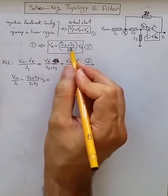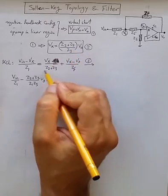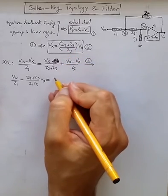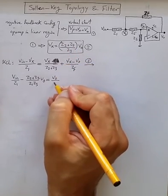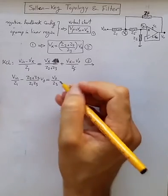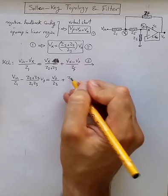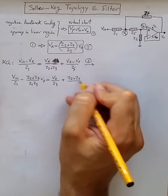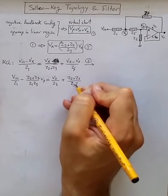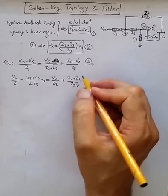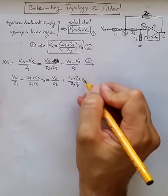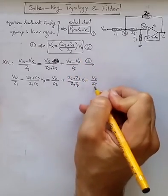We have denominator Z2 plus Z3, and we have numerator Z2 plus Z3. So when replacing Vx with this one, the denominator and numerator cancels out, and it's Vout divided by just Z3, plus Z2 plus Z3 divided by Z3 ZF. I'm just replacing Vx with this one, minus Vout divided by ZF.